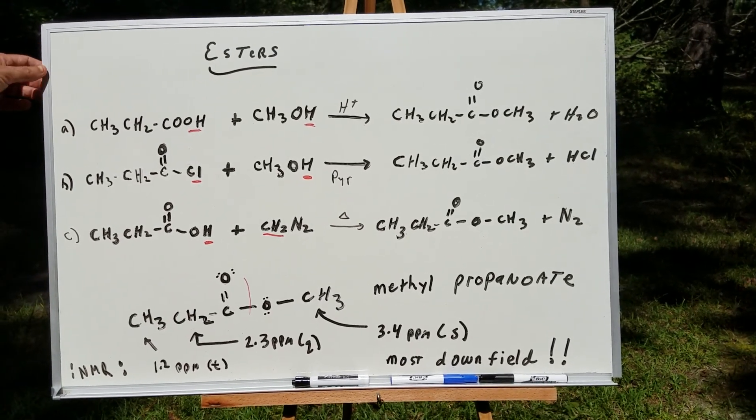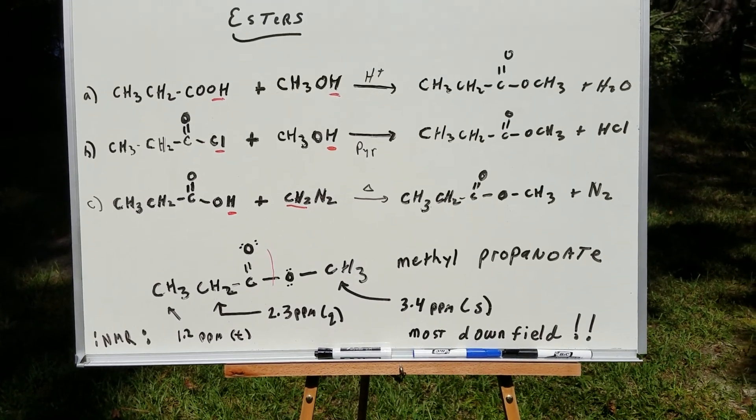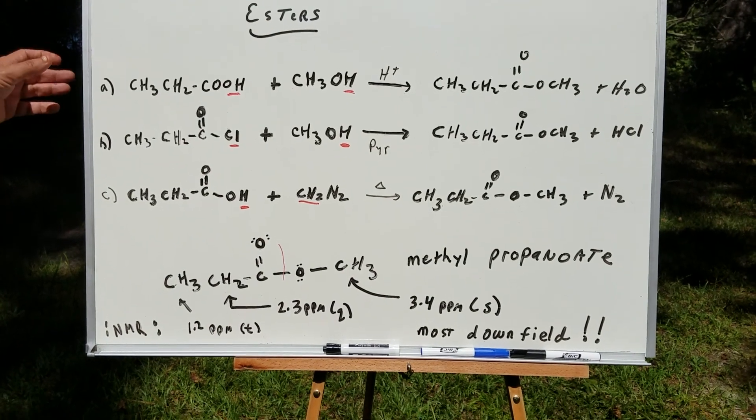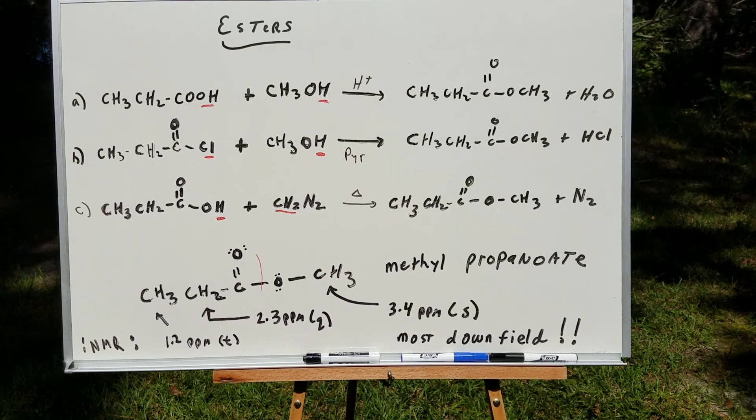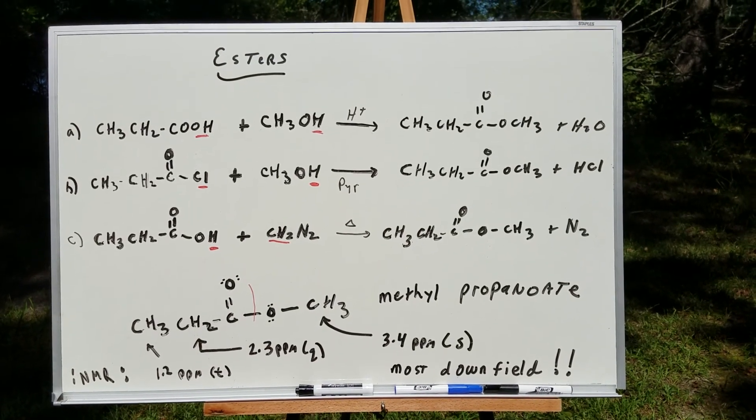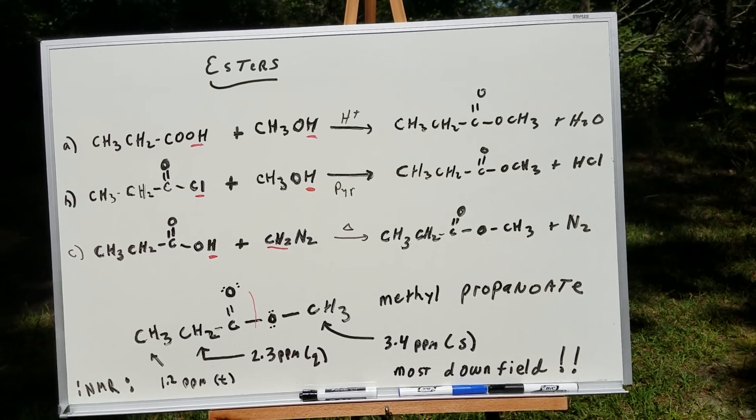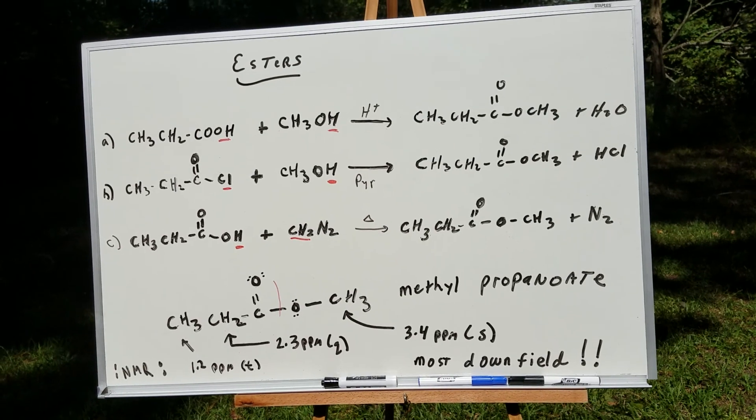This CH2 would come in, well, if it's next to a carbonyl, it comes in around 2.0. But here's a carbonyl next to an oxygen, so a little bit more than 2.0. It would come in maybe around 2.3 in that ballpark. So what we're going to do here is we're going to get this, and this is going to come in as a quartet. So that quartet would be about 2.3.